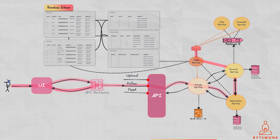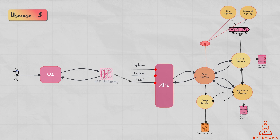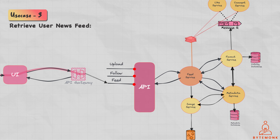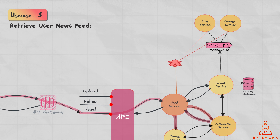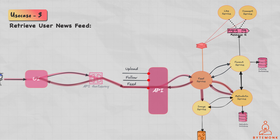Note that the follower feed is not explicitly represented in the database schema. It is a virtual representation of the activity feed that includes posts from users that a particular user follows. The follower feed is generated dynamically by the feed service by querying the follow table and post table to determine which posts should be included for a given user. It is not stored as a separate table in the database, but rather generated on the fly based on the user's activity. The sequence of events for the final use case — retrieve a user's news feed — is pretty simple. The client sends a GET request to the feed service. The feed service retrieves the list of users the given user follows from the metadata service, then queries the post table to get all posts created by those followed users. The feed service then retrieves the likes and comments for each post and generates the news feed by combining posts, likes, and comments data, returning it to the client.